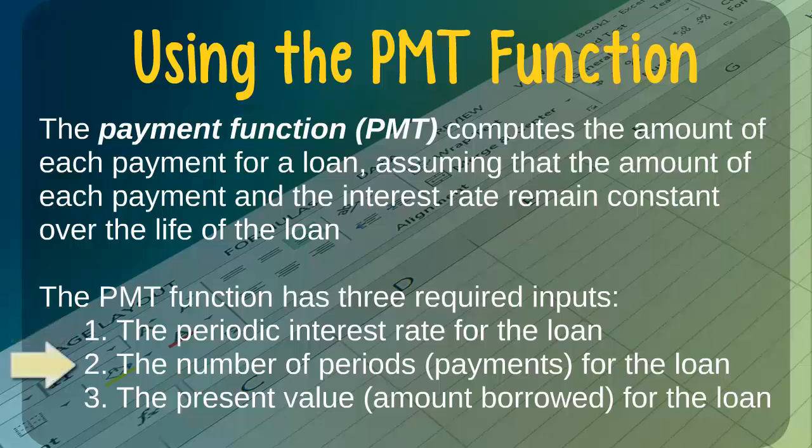The next required input for the payment function is the number of periods, or the number of payments for the loan. For example, if we have a three-year loan and we are making payments each month, then we would have a total of 36 loan payments. The third required input is the present value for the loan — simply the amount of money that we are borrowing, also commonly referred to as the principal. Note that when using the payment function in Excel, we typically enter the present value as a negative number, because from our perspective we are taking on debt, and the loan has a negative impact on our personal wealth.